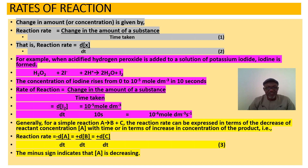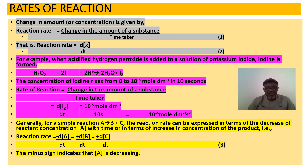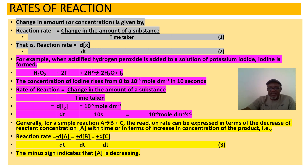Something similar happens in a race. In a 100-meter or 200-meter race, if somebody covers 200 meters in six minutes, then the rate of that race is the meters covered per second or per minute.